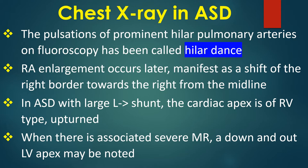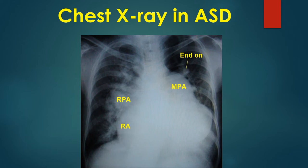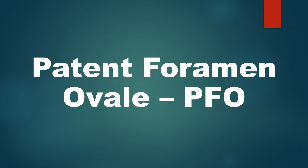In ASD with large left to right shunt, the cardiac apex is of RV type and upturned. When there is associated severe mitral regurgitation, a down and out LV apex may be noted. Chest X-ray in ASD with pulmonary hypertension shows prominent main pulmonary artery and right pulmonary artery. The left pulmonary artery shadow is retrocardiac, descending from the main pulmonary artery. Right atrial enlargement is visible. The cardiac apex is upturned, suggestive of a right ventricular apex. End-on vessels are also seen.